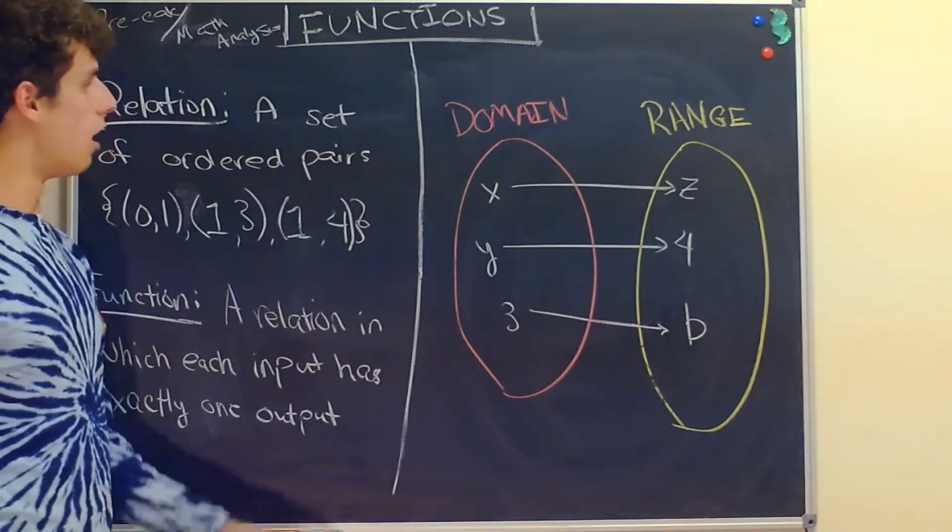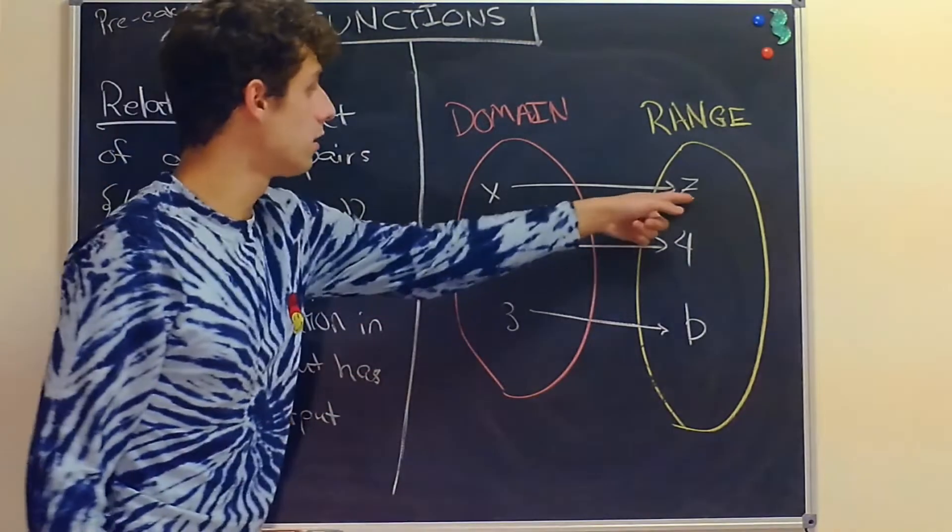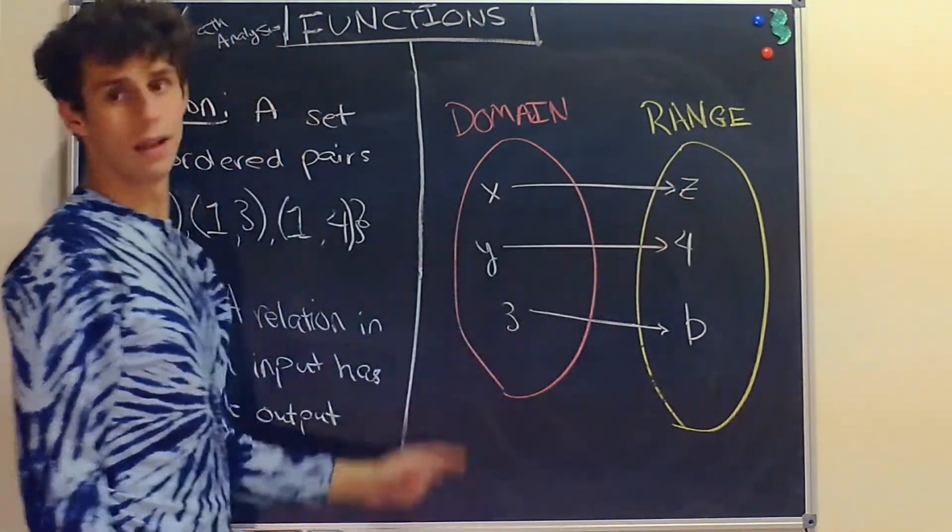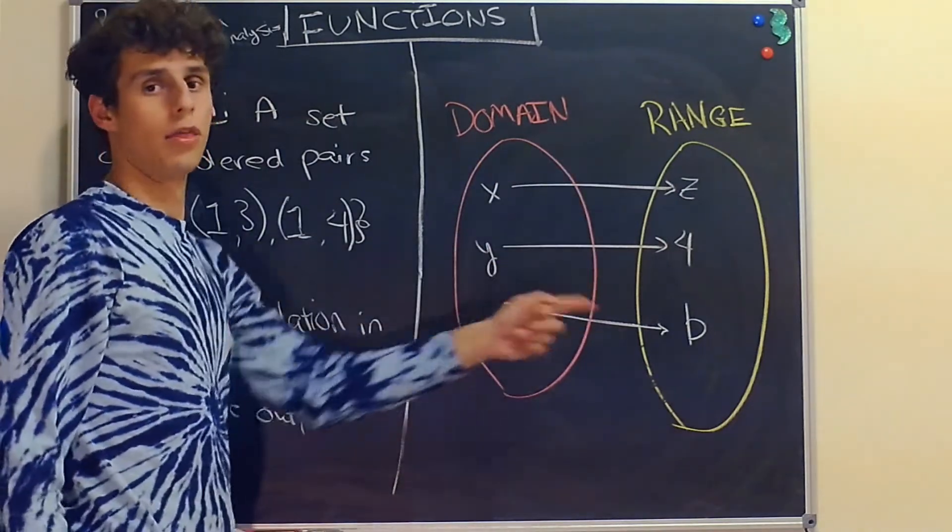This is an example of a function because x goes to z (one input goes to one output), y goes to 4 (one input, one output), and 3 goes to b.